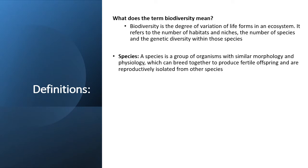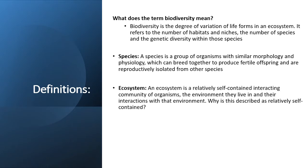In the last chapter, we discussed species where we said they are similar morphologically, biochemically, and physiologically, and they're able to reproduce to give fertile offspring. We can also define an ecosystem as a community of organisms that interact with the environment.